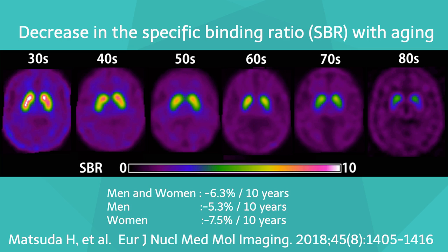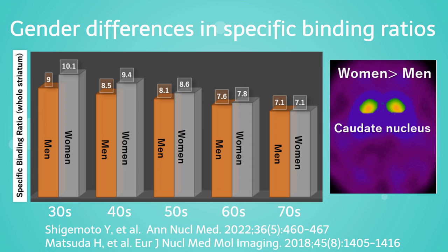In Parkinson's disease, the specific binding ratio declines several times faster than in healthy individuals. Therefore, age must be taken into account when evaluating specific binding ratios. Women have a higher specific binding ratio in the striatum than men before menopause, and about the same after menopause.